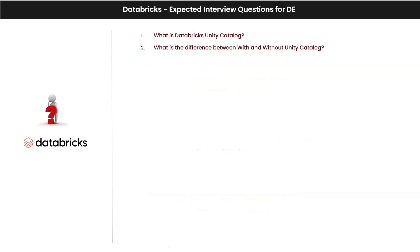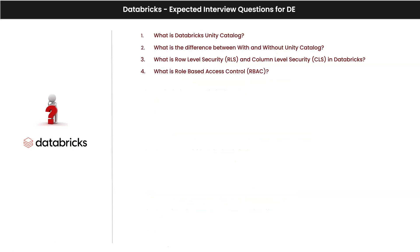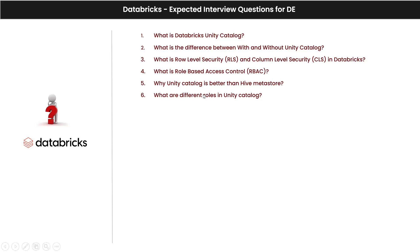What is Unity Catalog — we discussed. What is the difference with and without Unity Catalog — that means Hive Metastore versus Unity Catalog, indirectly. What is row-level security, what is column-level security in Databricks? What is role-based access control (RBAC) — if you have groups, we assign roles to those groups and based on those roles they get access. We also discussed why Unity Catalog is better than Hive Metastore.